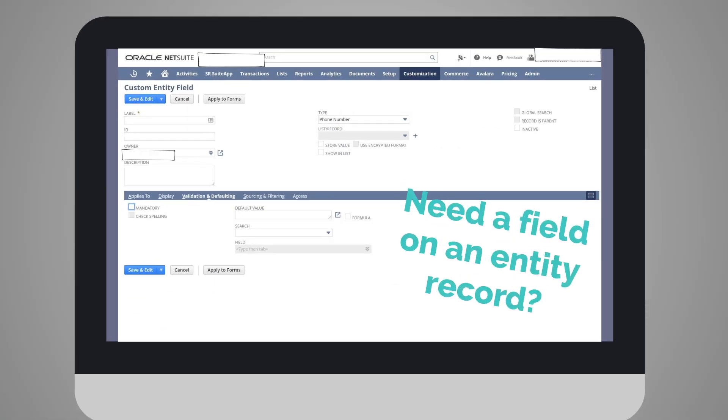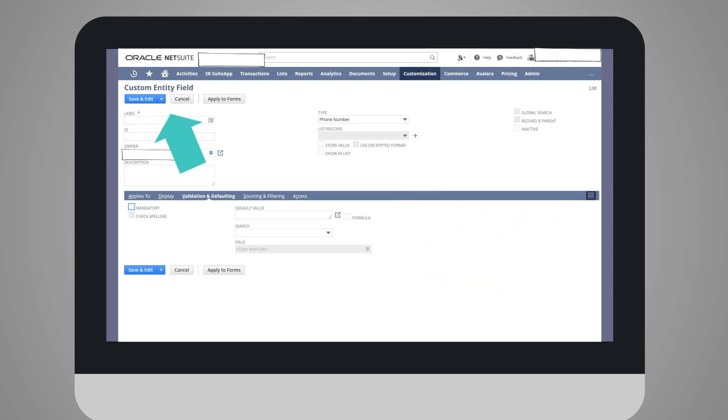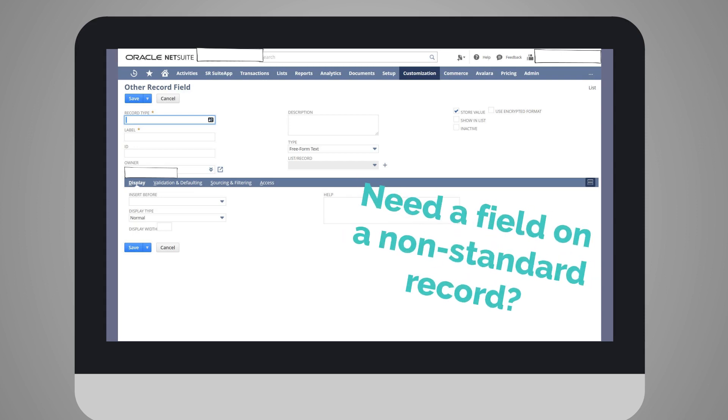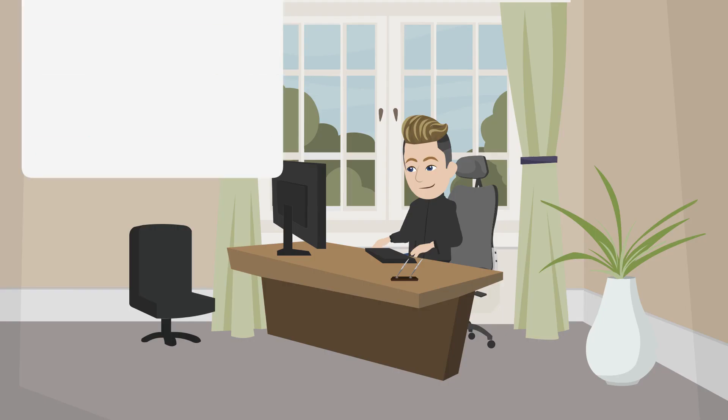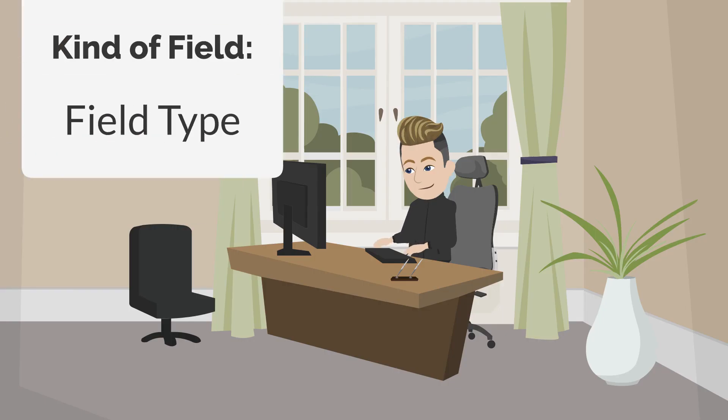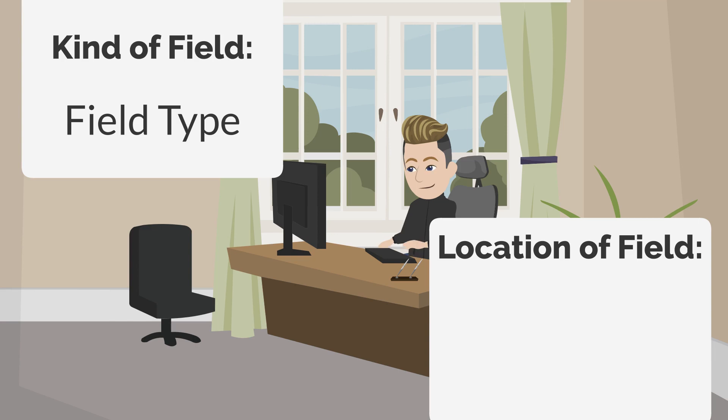For example, if you needed to add a field to an entity record like an employee or vendor record, you would use the entity fields category. If you needed to add a field to a particular line on a transaction, you would use the transaction line fields category. If you needed to add a field to a record that isn't on one of the standard options, you would use the other record fields category. Once you know what kind of field you need, the field type, and where you need the field to be, the field category, you are ready to create a custom field.